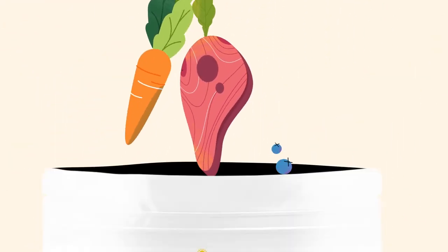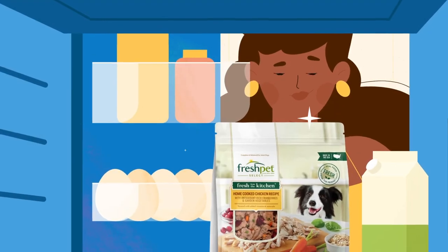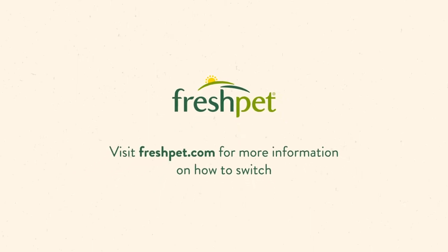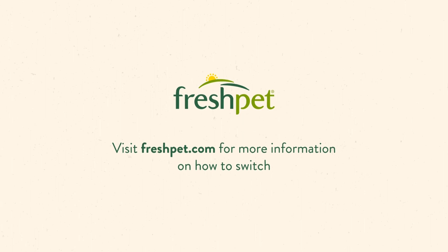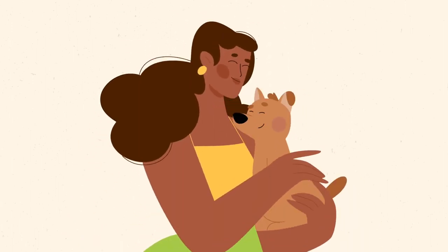Real food with expiration dates that belongs in the fridge next to our food. Visit freshpet.com for more information on how to switch. Love is forever. Your pet food shouldn't be.